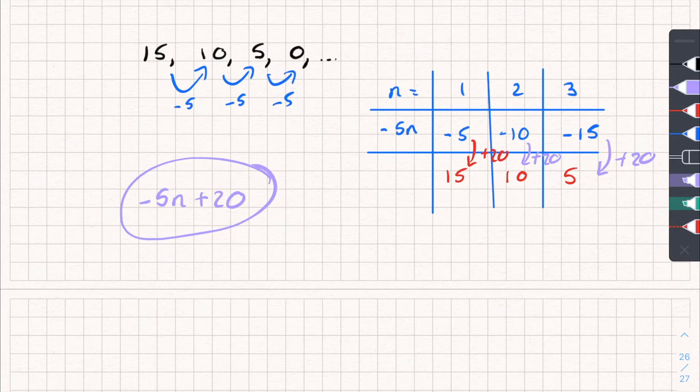Hopefully that makes sense. That's how we calculate the nth term. The other thing you could be asked is you could be given an nth term, and then it could say, is the following number in the sequence? So for example,